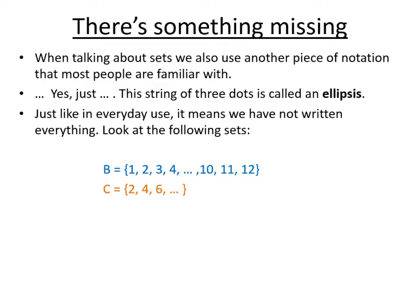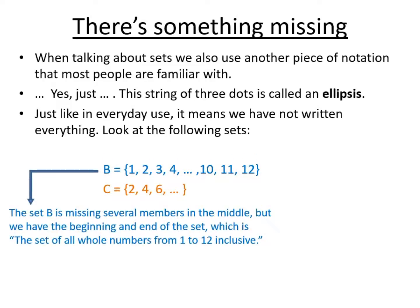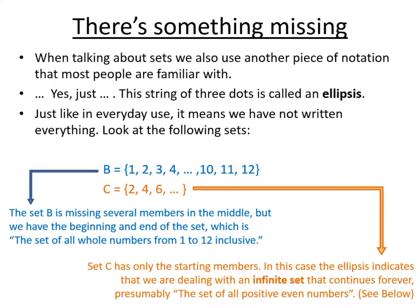If we look at the following two sets we can see that set B has an ellipsis in the middle and it's representing the five numbers that have been left out, and we can clearly see from the numbers that are there what the pattern of the set is. So we can use the ellipsis for convenience to avoid writing the whole set. In the second case this is an infinite set. It shows that after the ellipsis the terms go on forever again in the pattern that has been shown. So in this case we might assume that this is the set of all positive even numbers.